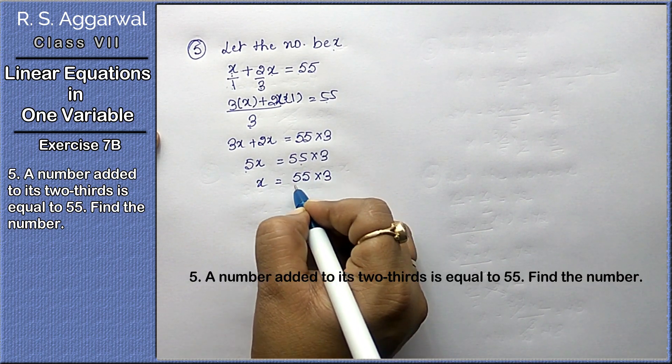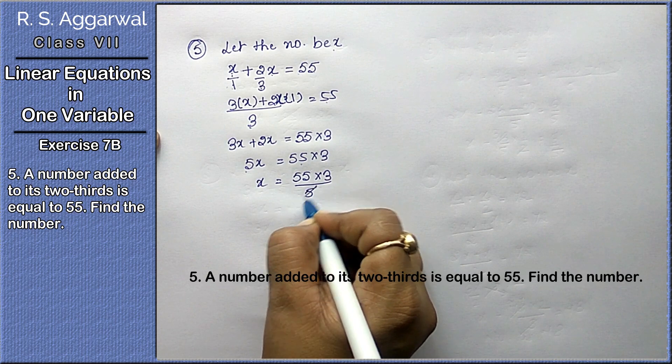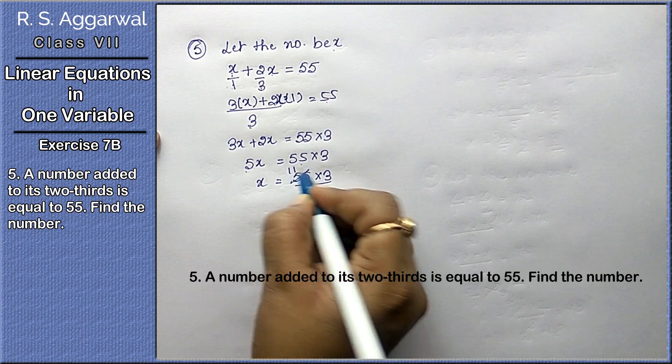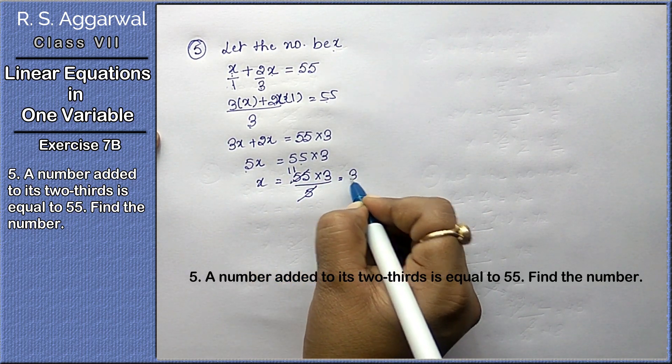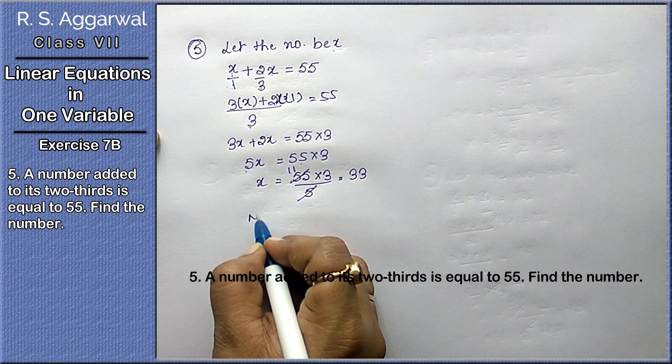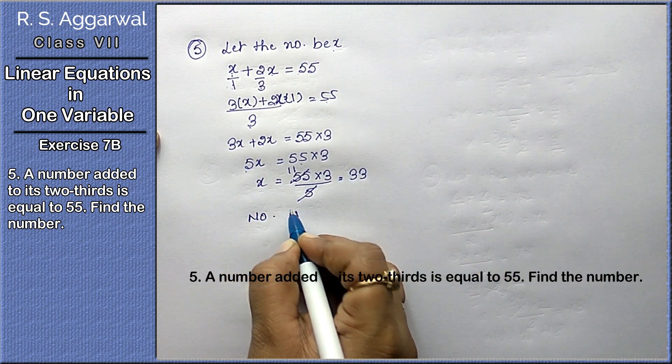5x equals, we'll write it like this, multiply later. 55 into 3 upon 5. 5 ones are 5, so 11, 3 is 33. The number is 33.